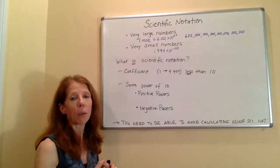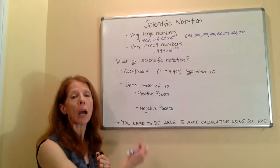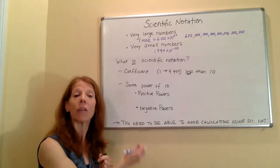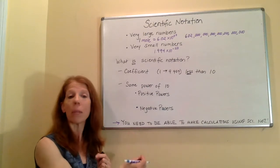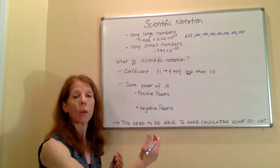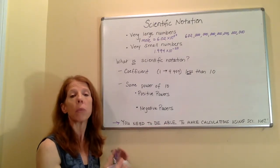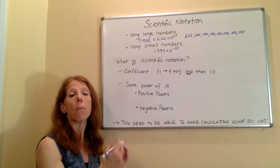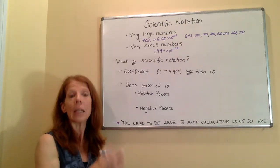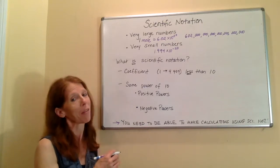And here's a really important piece of information. You will need to be able to make calculations in scientific notation. It's a really big deal. You're going to use these numbers all the time. So not only do you need to be able to get from one to the other, from scientific to decimal, decimal to scientific, but you also need to be comfortable making calculations using those numbers in scientific notation because they are so big and so small.